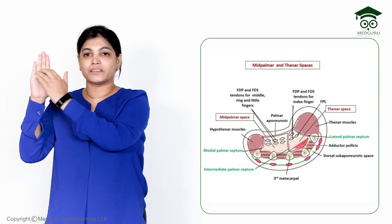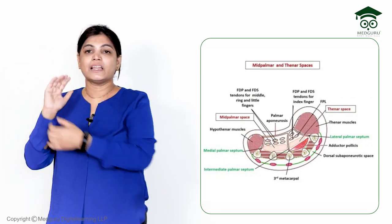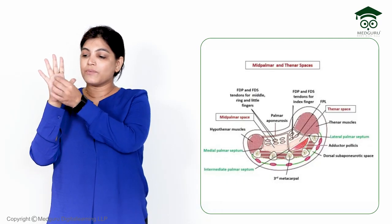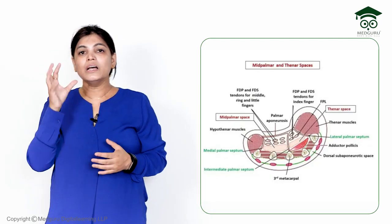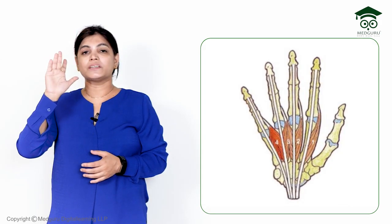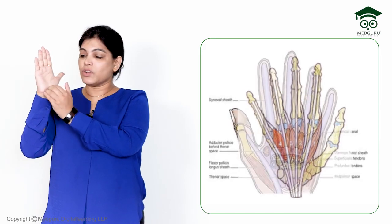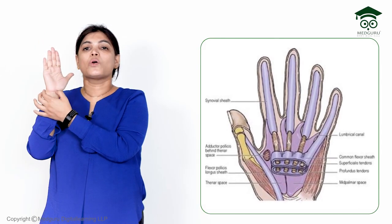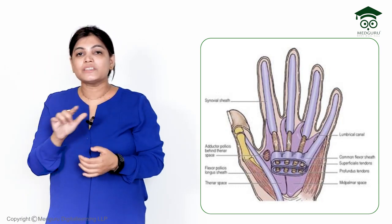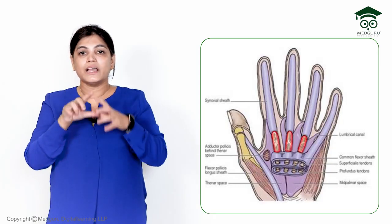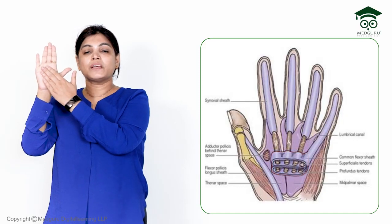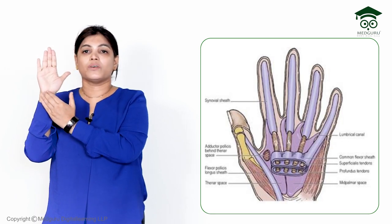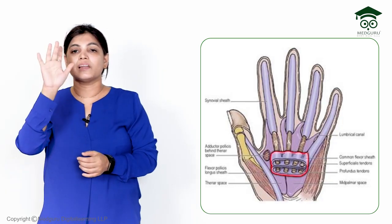Coming to the proximal and distal extent of the mid palmar space: proximally it is closed, with no communication, because the synovial sheath closes around the long flexor tendons. So generally the mid palmar space only rarely communicates with the forearm space. Distally, it communicates very well with the lumbrical canals.